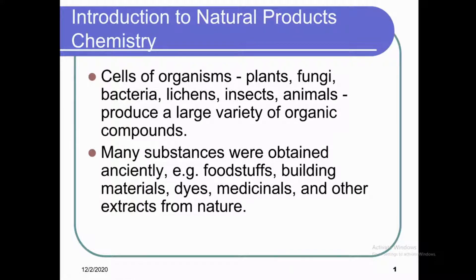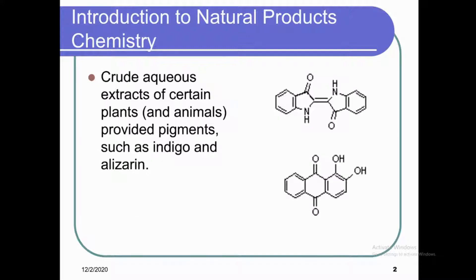Many substances were obtained anciently as foodstuffs, building materials, dyes, medicinals, and other extracts from nature. Crude aqueous extracts of certain plants and animals provided pigments such as indigo and alizarin. These two pigments are used as coloring agents in the clothing and textile industry. They widely occur in the crude extracts of certain plants and animals. Both indigo and alizarin are colored substances and are natural products.